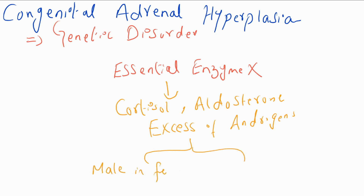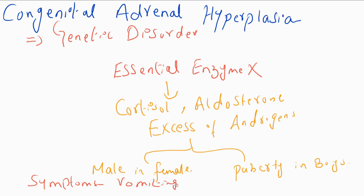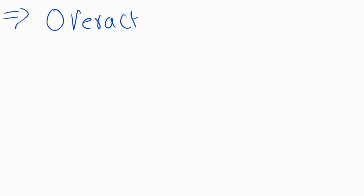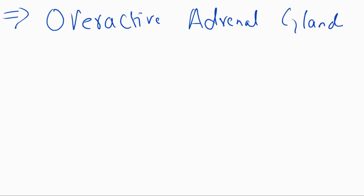The enzyme deficiency also results in excess of androgens. These conditions lead to male characteristics in girls or females, and early puberty in boys. The symptoms of congenital adrenal hyperplasia include vomiting and failure to thrive.